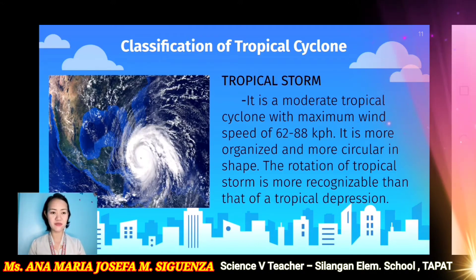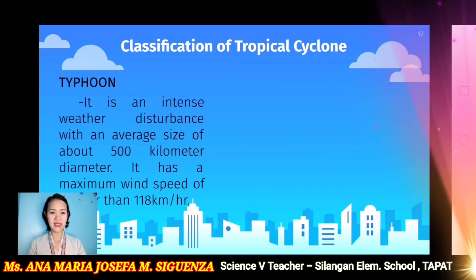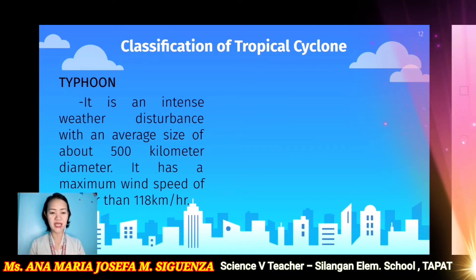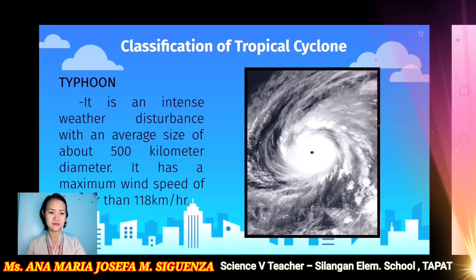The third classification is the typhoon. It is an intense weather disturbance with an average size of about 500 kilometers in diameter. It has a maximum wind speed of greater than 118 kilometers per hour. It is wider compared to the tropical depression and the tropical storm. That is the classification of a tropical cyclone.